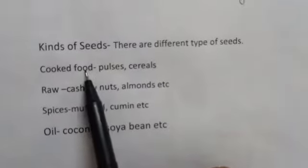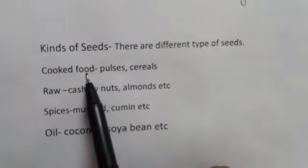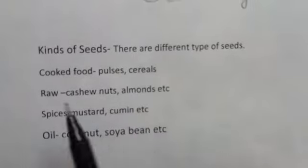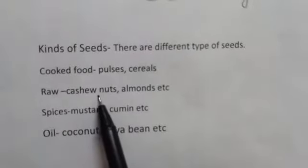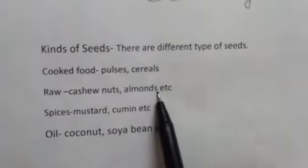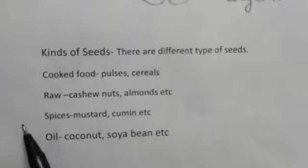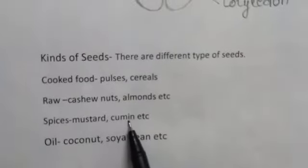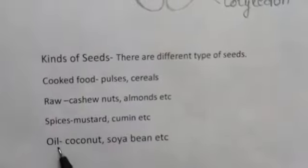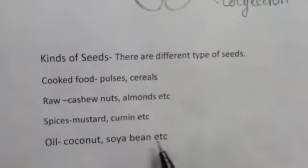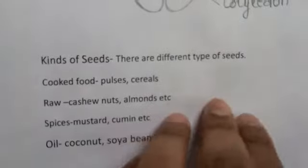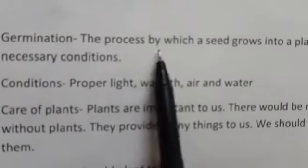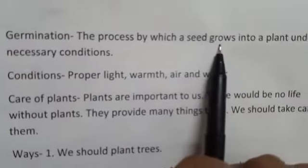Seeds are of different types. Some seeds we have to cook before eating, like pulses and cereals. Some seeds we eat raw, like cashew nuts and almonds. Some seeds are used as spices, like mustard and cumin. Some seeds are used for oil, like coconut and soyabean.